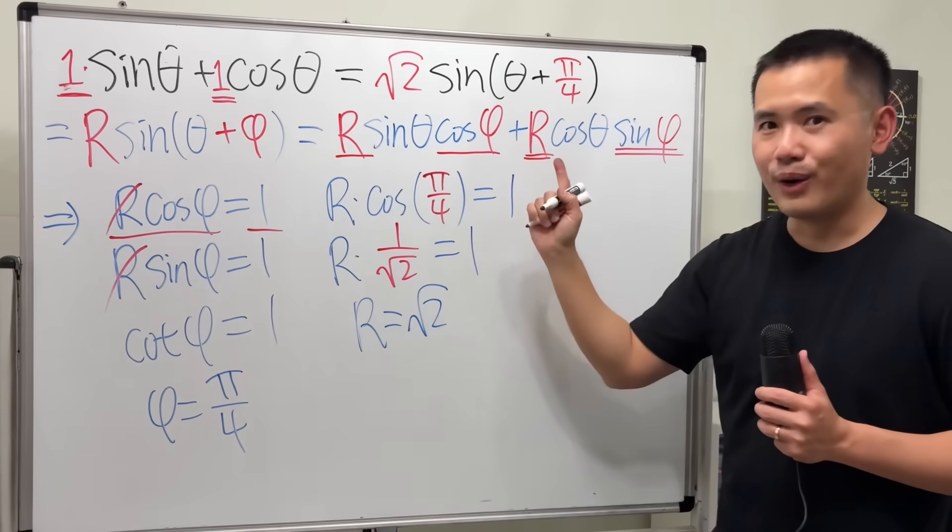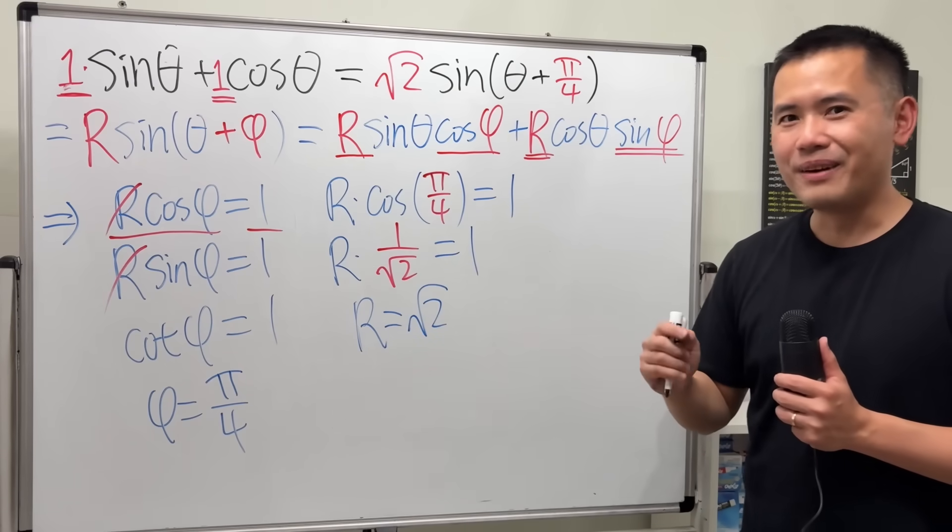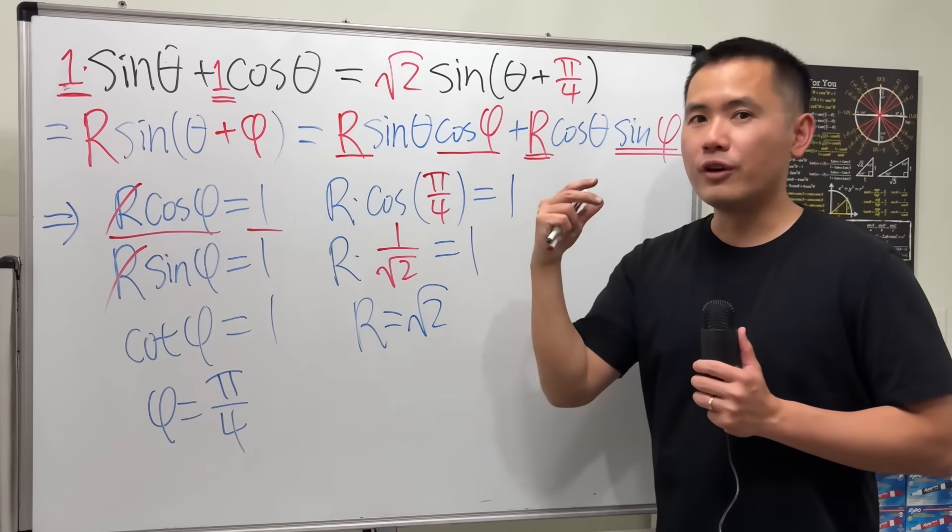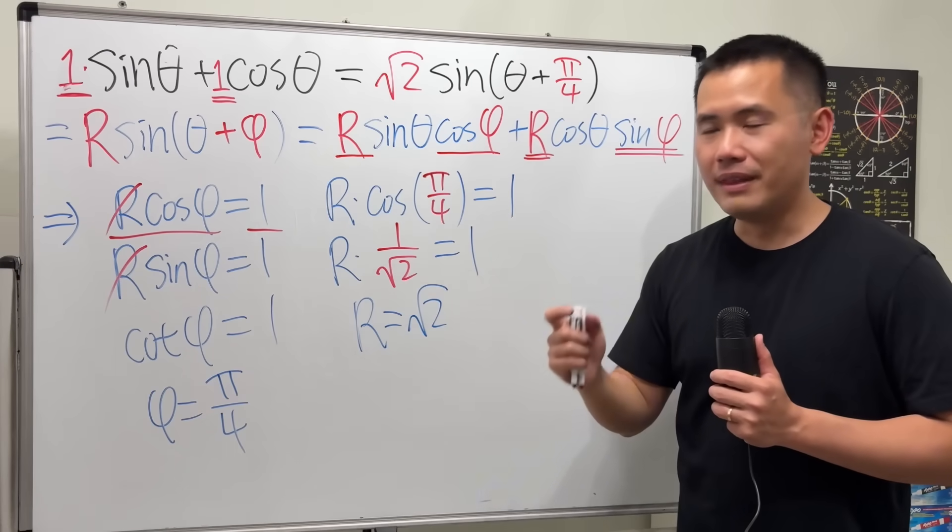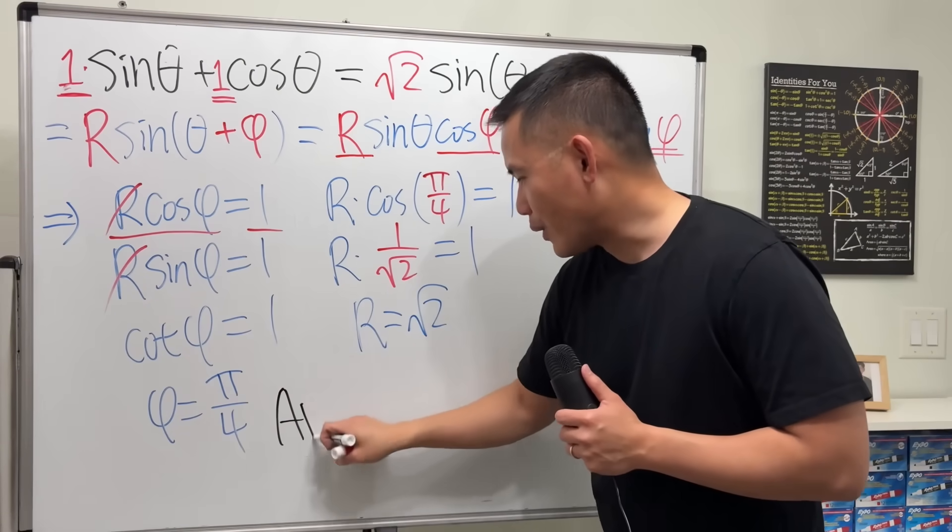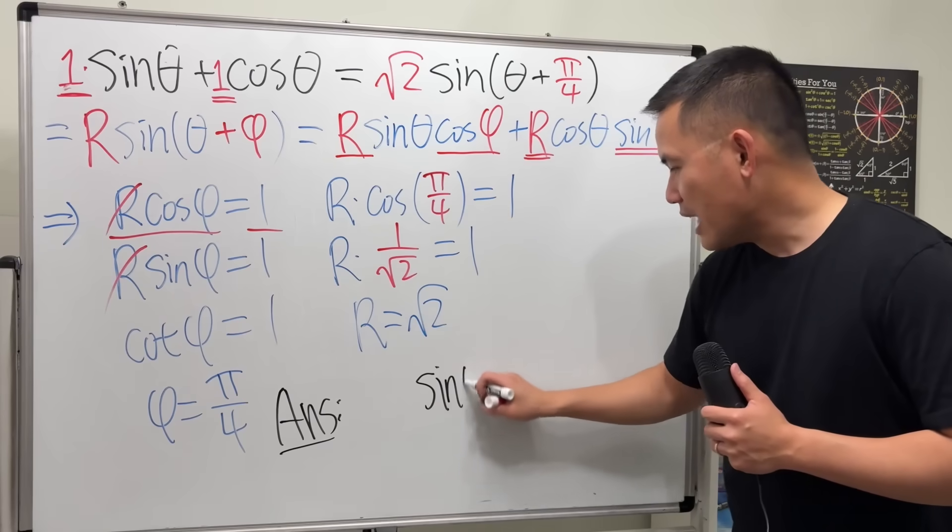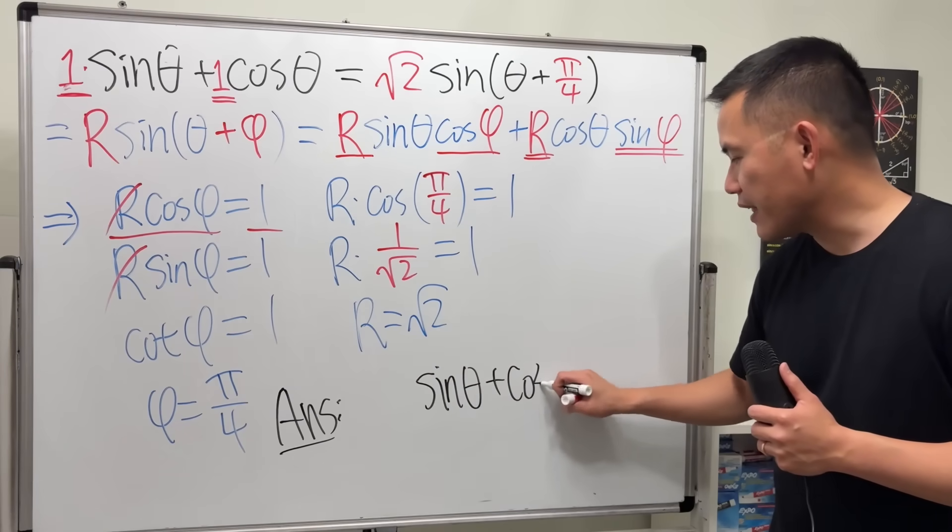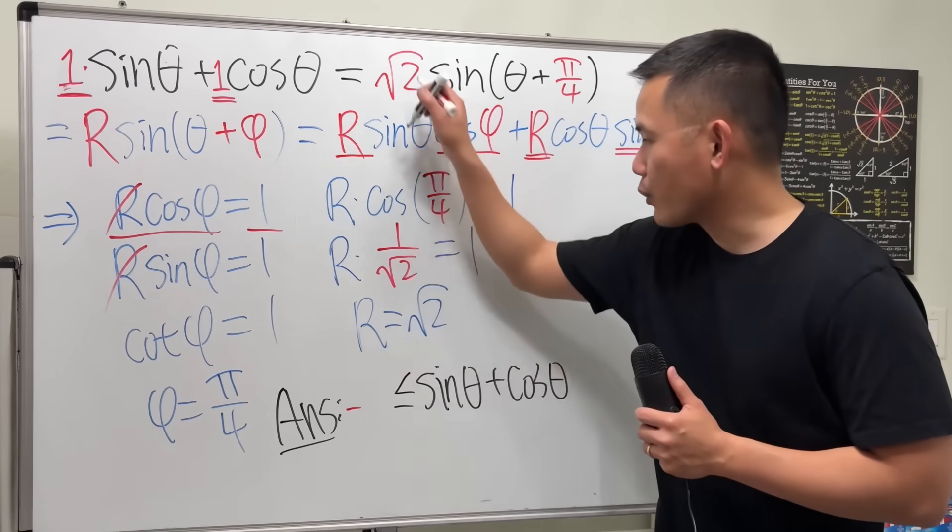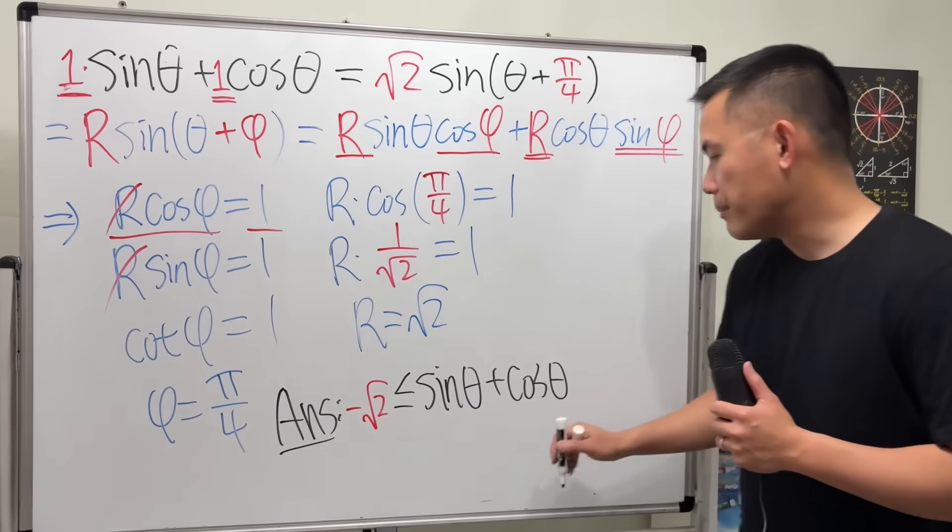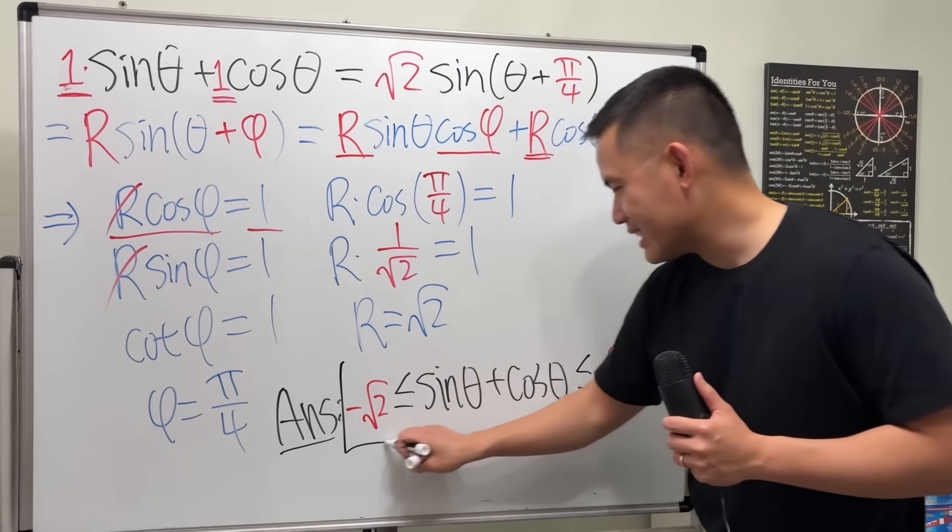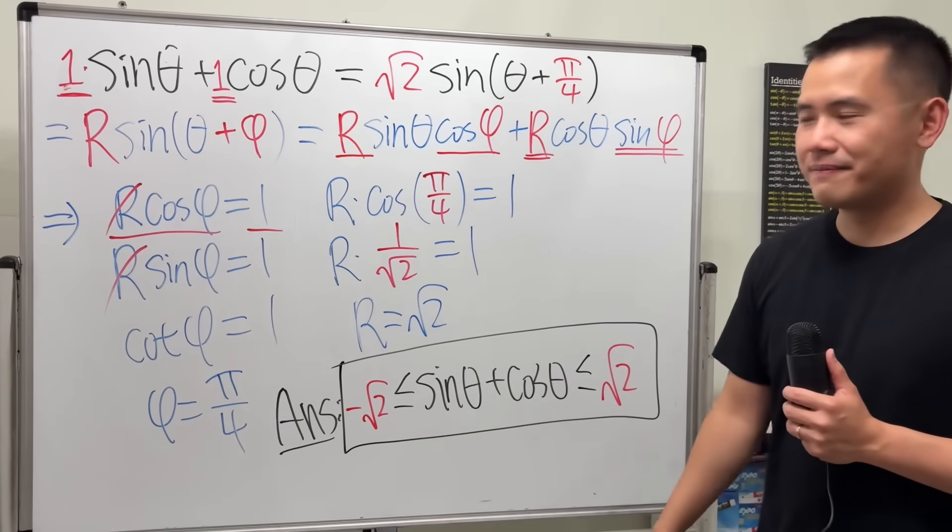They are identical—very cool, huh? Now, per our discussion earlier, sine of anything—the output is always going to be between negative one and one. Now we're just going to multiply that by square root of two. So the answer to our question earlier, when we have sine theta plus cosine theta, in fact the smallest value that we can get is negative square root of two, and then the biggest value that we can get is positive square root of two. That finishes the question. That's it.